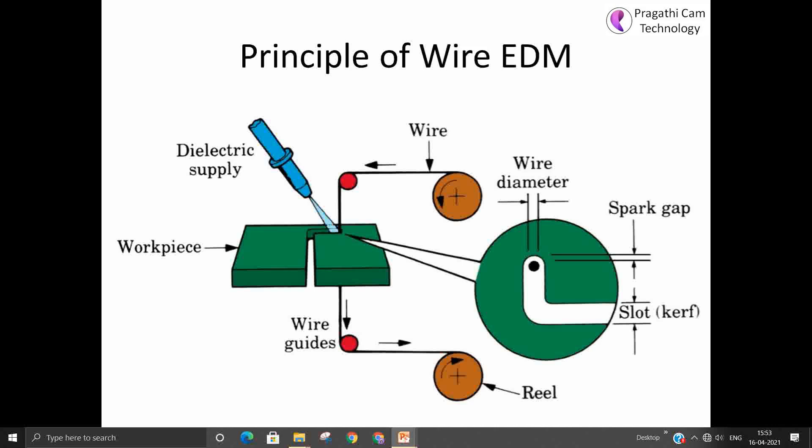Next we will see the tool is called the wire. This wire is made up of brass or copper. This wire diameter is generally from 0.1 to 0.3 mm. In general, 0.25 is the commonly available wire for the EDM.